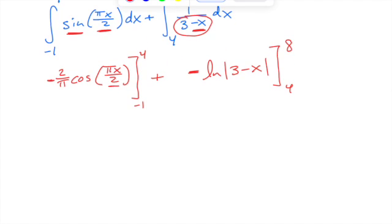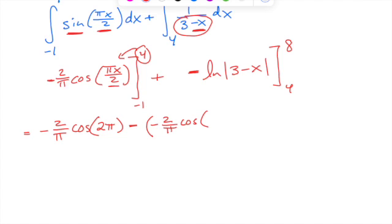So now let's just plug in, simplify, a little trig practice here, a little ln practice here. So we get negative 2 over pi, cosine of, remember the upper limit goes in first, so that will be 4 times pi over 2, so that will be 2 pi, right? 4 pi over 2, 2 pi, minus, always doing the difference, minus the value of negative 2 over pi, cosine, plugging in negative 1, so that will be negative 1 times pi over 2, or negative pi over 2.